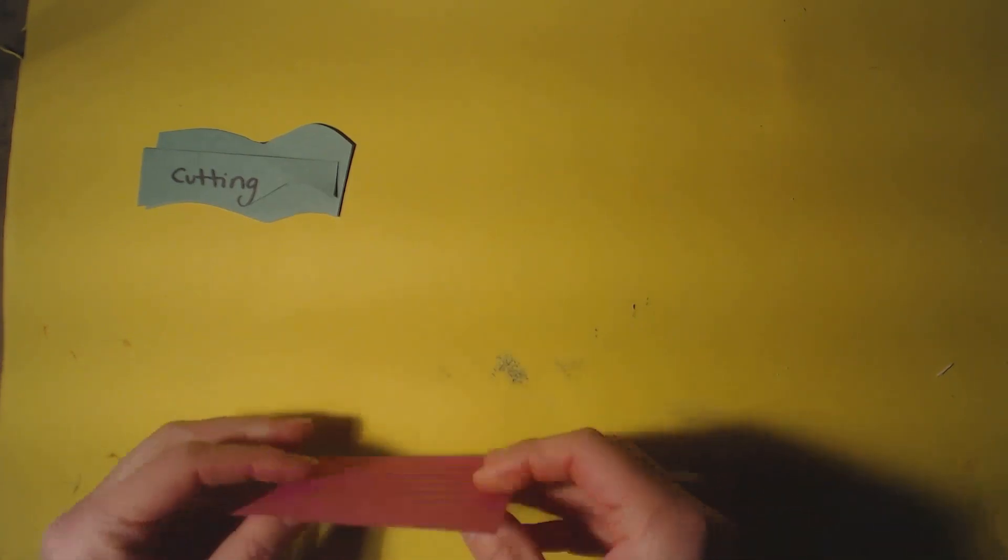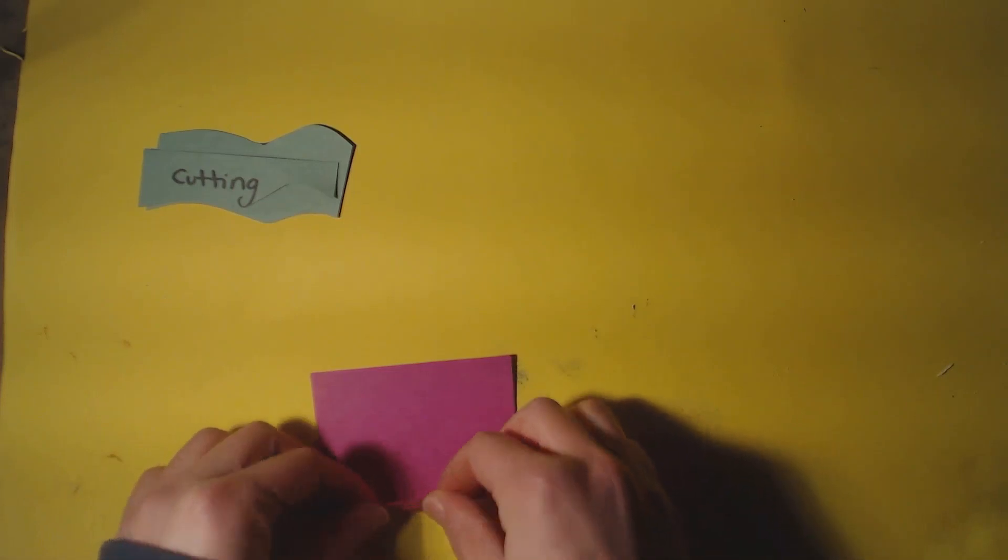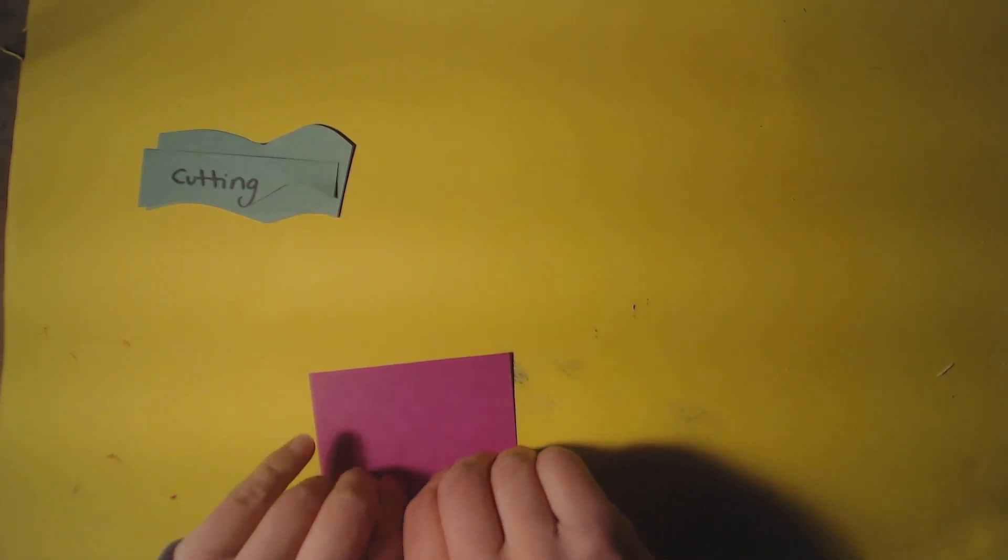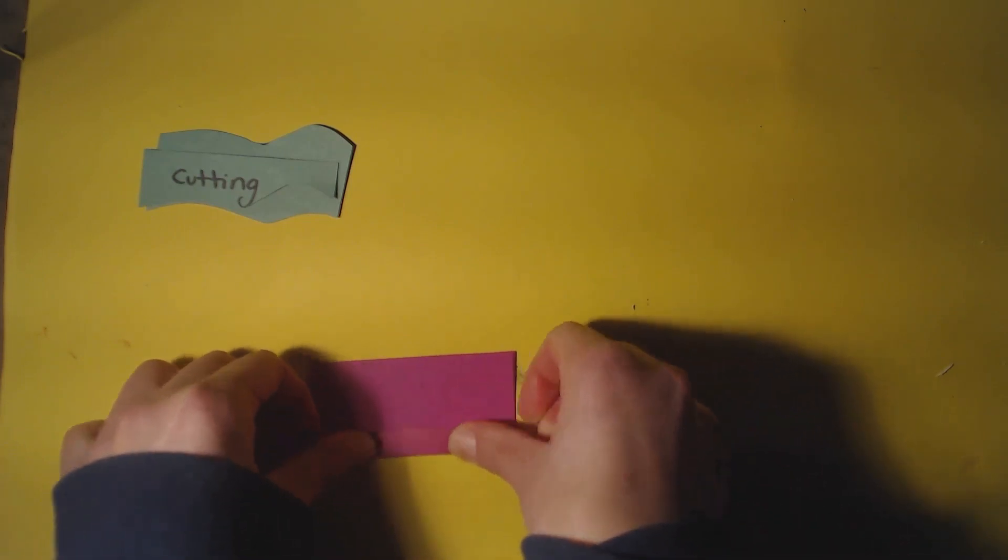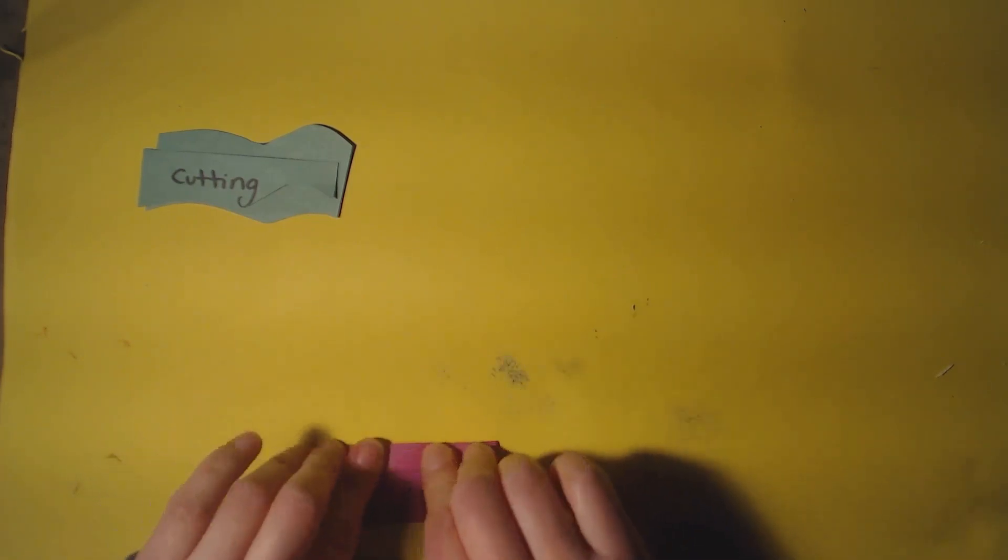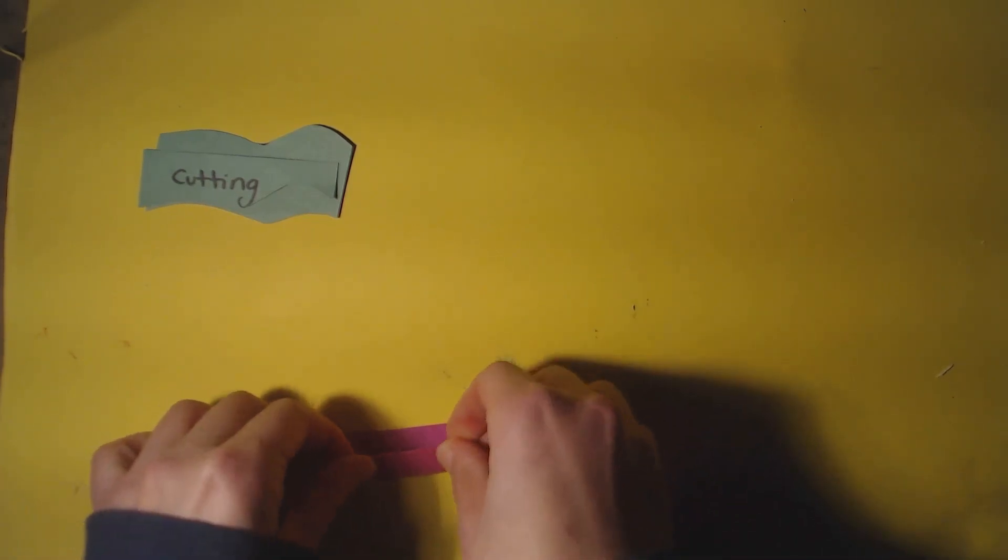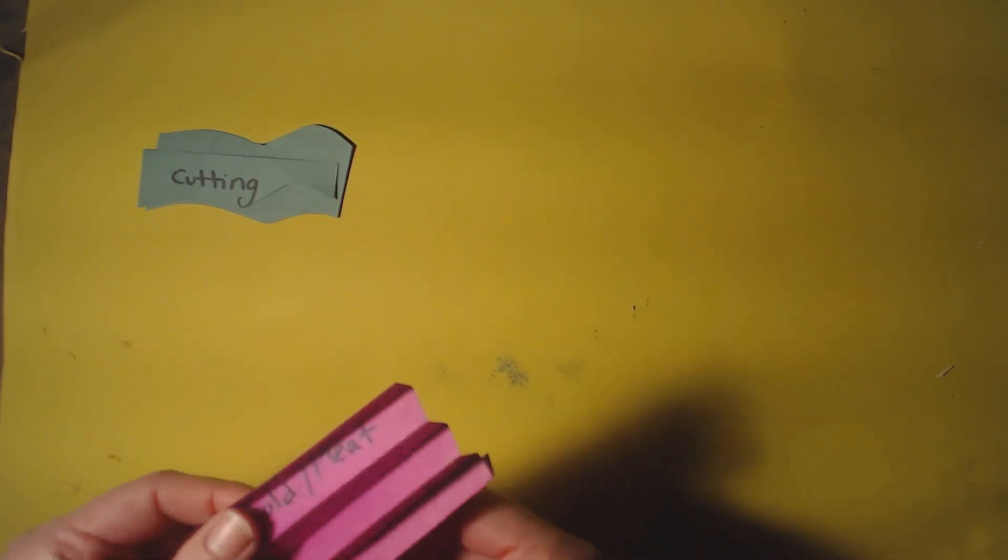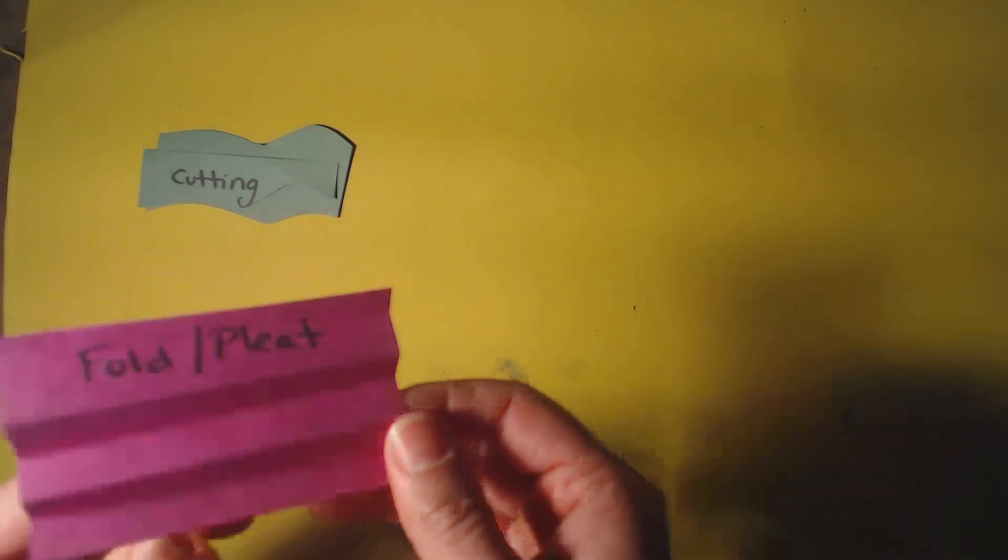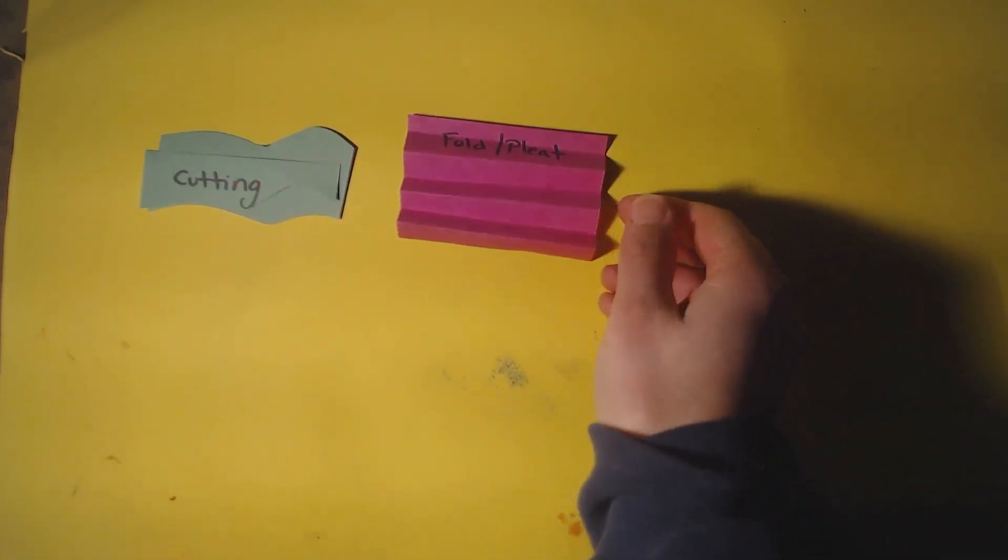The next one is folding and pleating. So that's where you take a piece of paper and if you think of a folded paper like a fan, that is folding and pleating. So I'm folding it back and forth every other direction. And it has this nice zigzag that is folded or pleated.